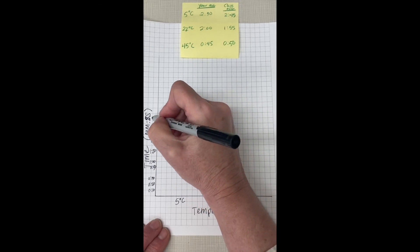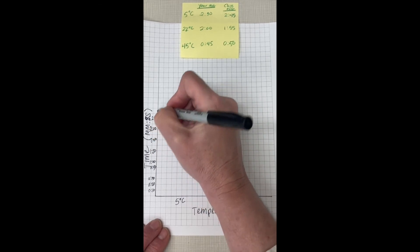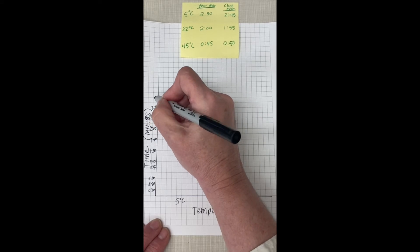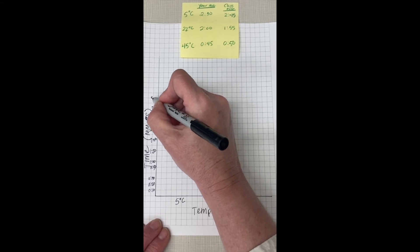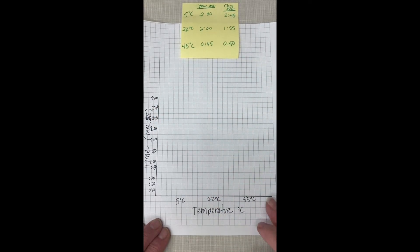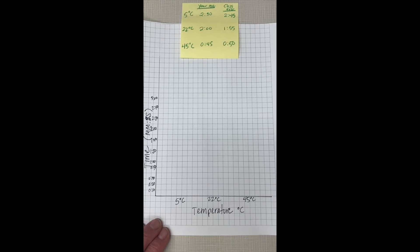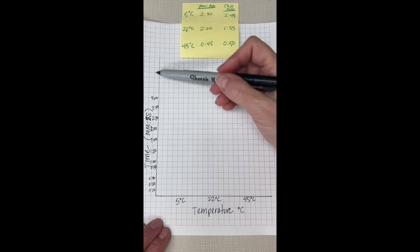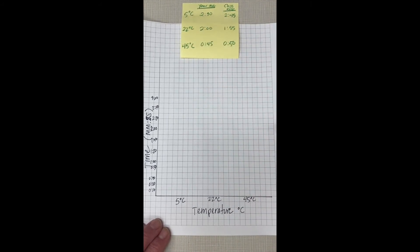And then 2:20, 2:40, and then 2:60 would be three minutes. So that's pretty good use of the space available in front of you. I could have done it every five seconds and it would have been twice as big, but this makes sense to me.